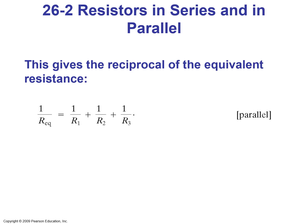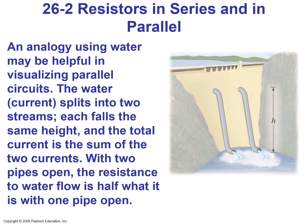An analogy using water may be helpful in visualizing parallel circuits. A water current splits into two streams — each follows the same height, and the total current is the sum of the two currents. With two pipes open, the resistance to water flow is half what it is with one pipe open.